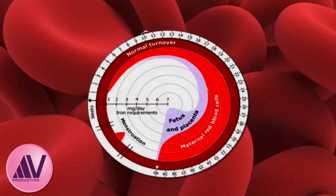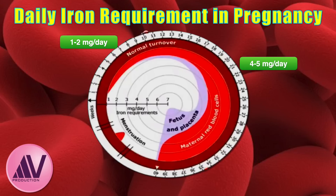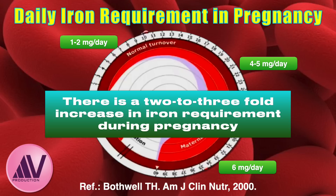A primary reason for high IDA incidence during pregnancy is the rapidly increasing daily iron requirement. In early pregnancy, the daily requirement is approximately 1–2 mg, sufficient for GI sloughing and early RBC mass increase. By the second trimester, demand rises to 4–5 mg per day due to increased maternal and fetal RBC production and fetal-placental growth. In the third trimester, it further rises to approximately 6 mg per day, resulting in a significant 2–3 fold increase in iron requirement overall, accompanied by a 10–20% increase in folate requirement.